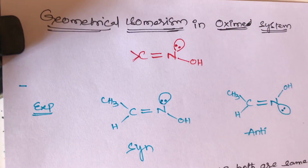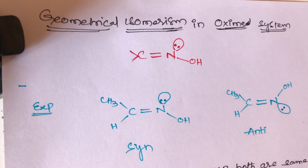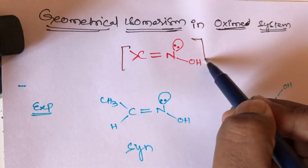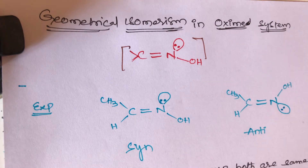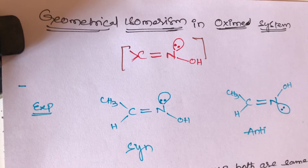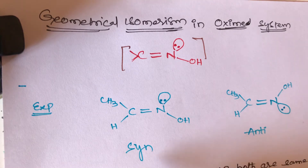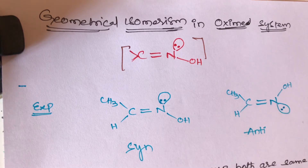Next topic is geometrical isomerism in the oxime system. Generally, oximes are formed in aldehydes and ketones. Aldehydes form aldoximes and ketones form ketoximes. There are two types: syn-oxime and anti-oxime. Syn means same, just like cis, and anti means opposite, just like trans.